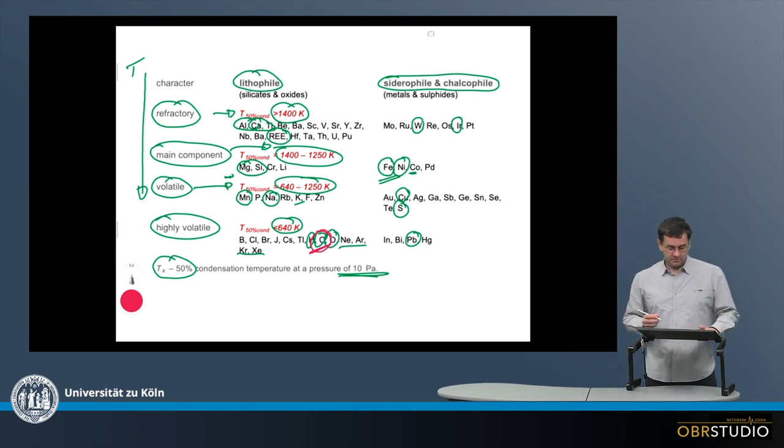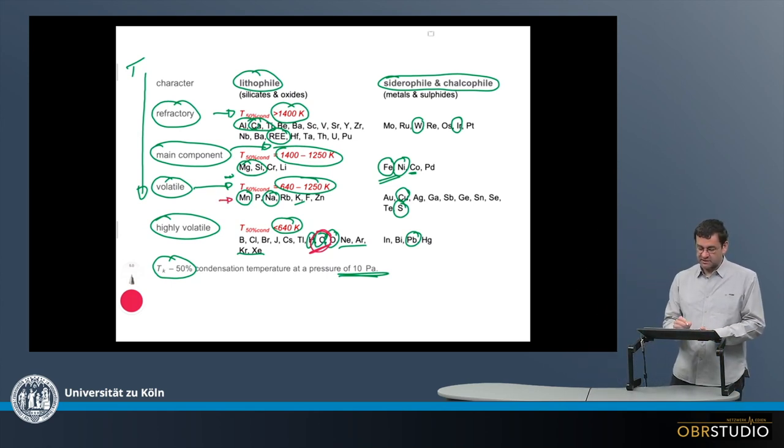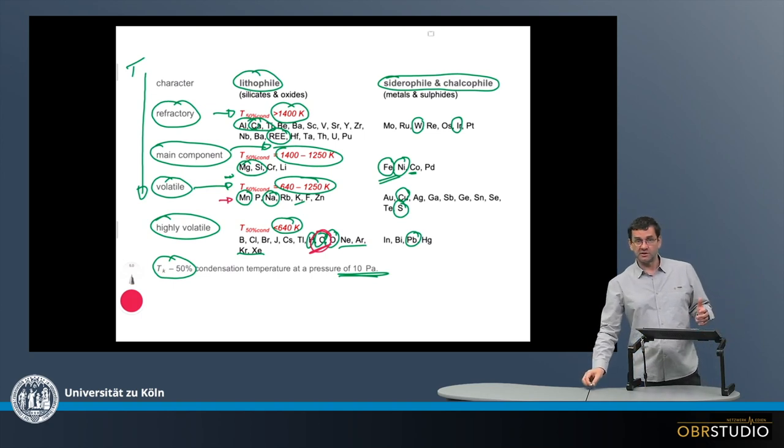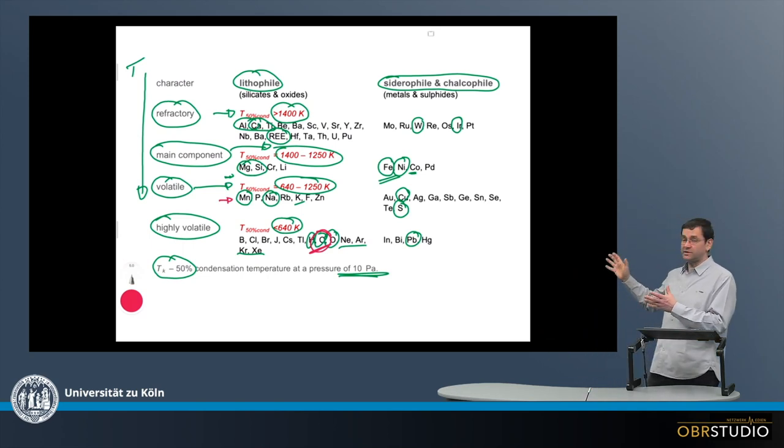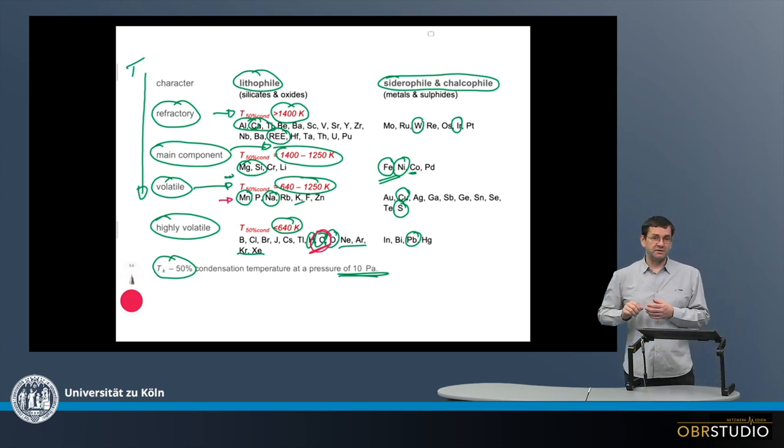A similar second example might be manganese that also condenses within olivine at higher temperatures already than its condensation temperature. This all shows how we can immediately relate this kind of table to what we observe in meteorites.